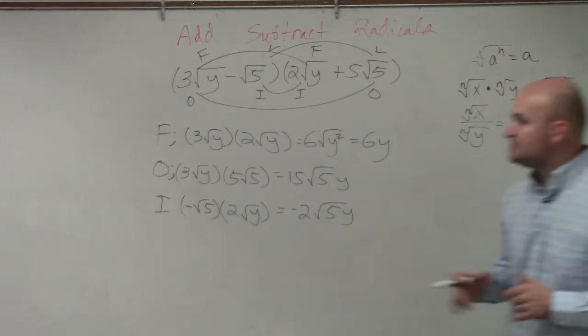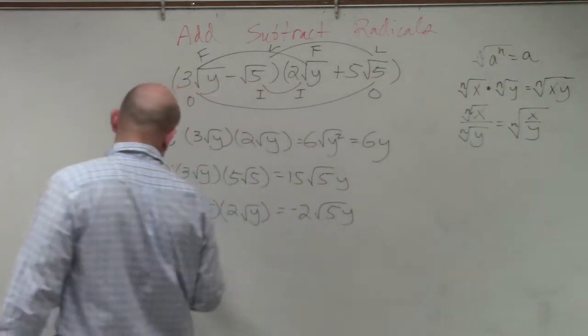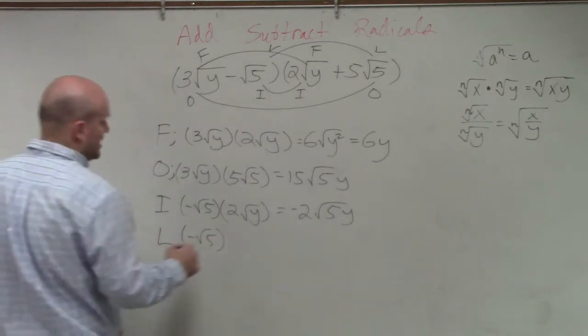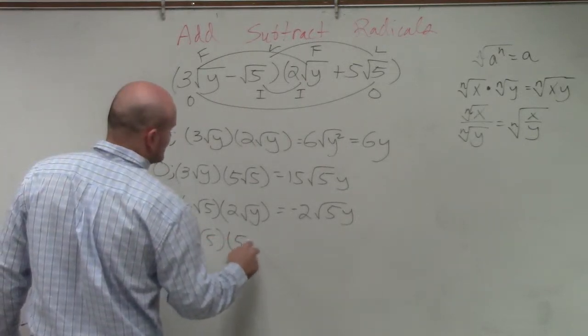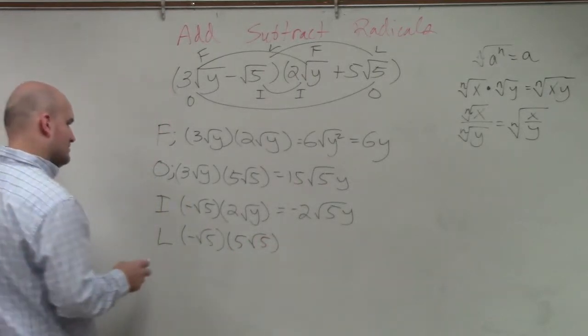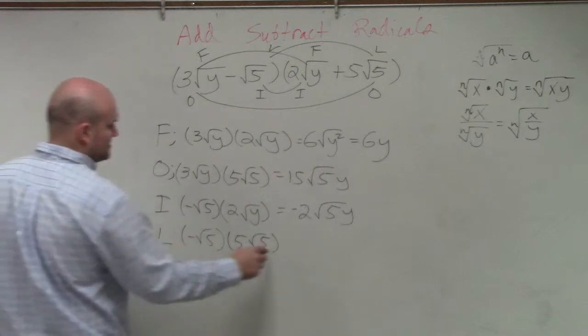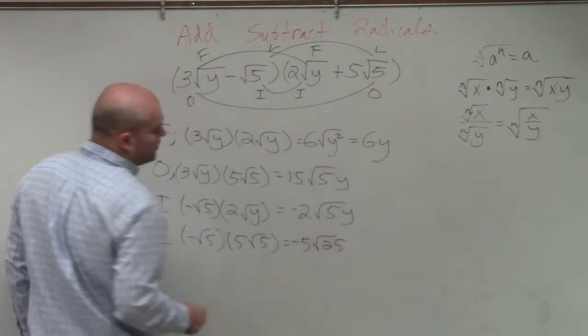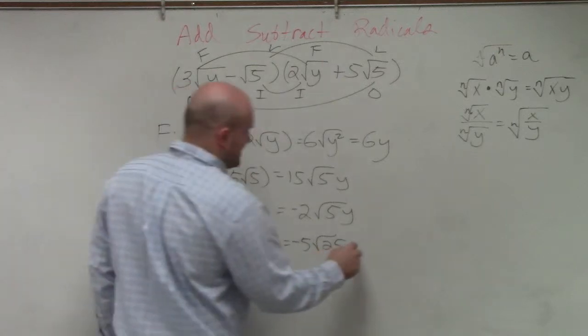And then the last ones I'd like to do is the last, which is going to be a negative square root of 5 times 5 square root of 5. So that becomes a negative 5 times the square root of 25, which is 5. 5 times negative 5 is negative 25.